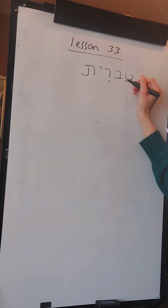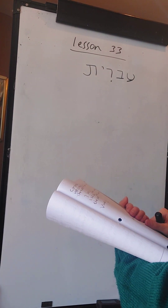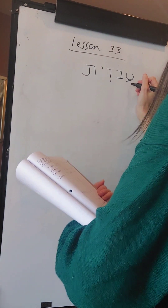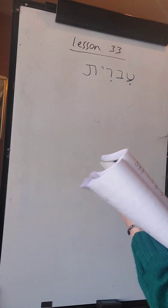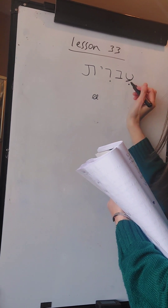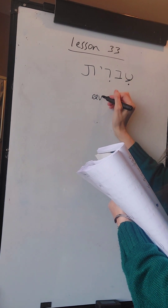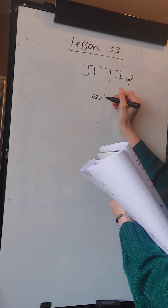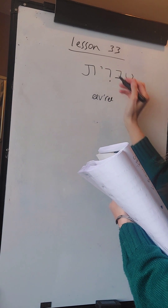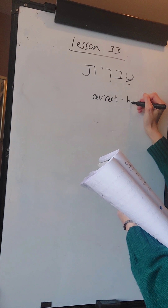The first Hebrew letter here is the Ayin, which is a silent letter so there's no sound. It takes on the sound of the vowel underneath it, which is the I vowel - sounds as EE. Then the next consonant is the Vet which sounds as V. This is the Resh, sounds as R. With the I vowel again, the EE sound - IVRIT, which means Hebrew.